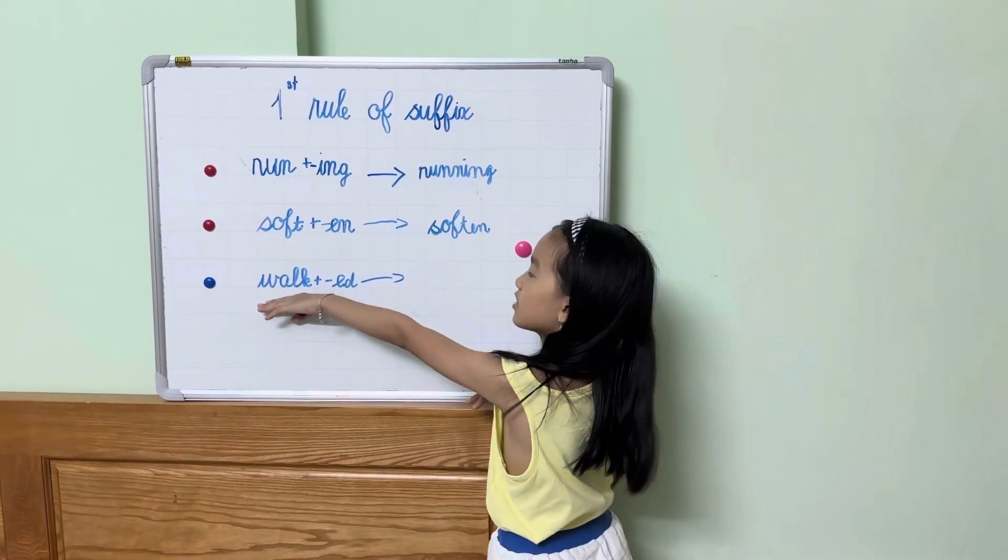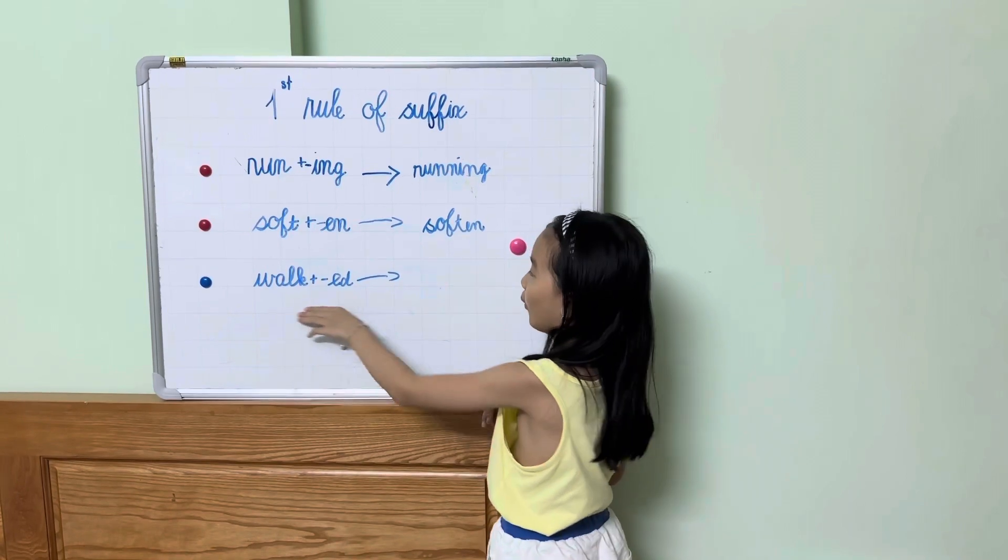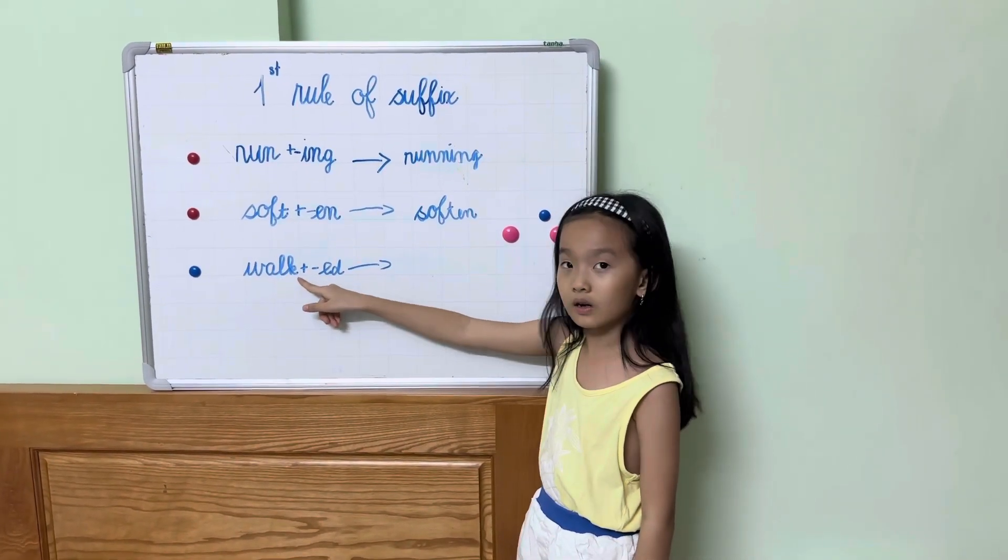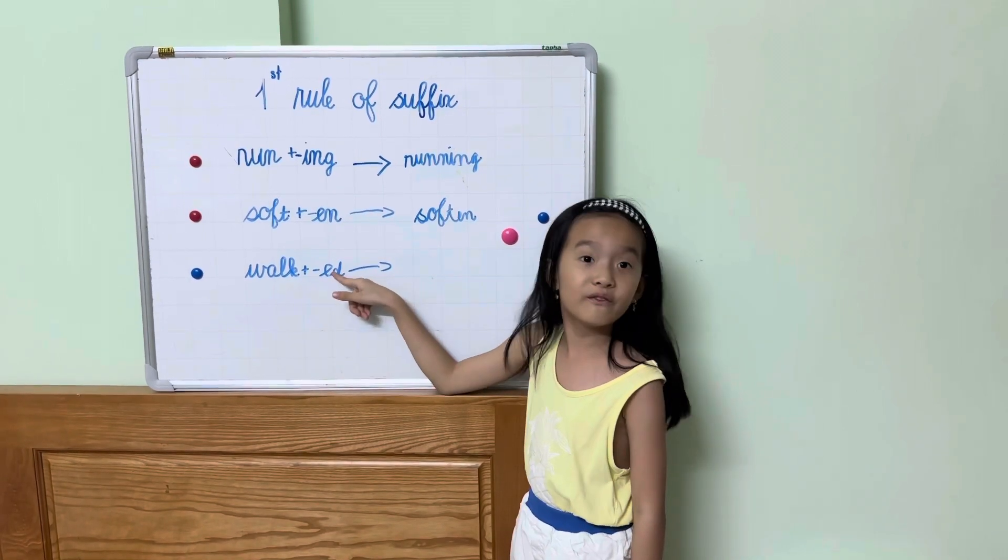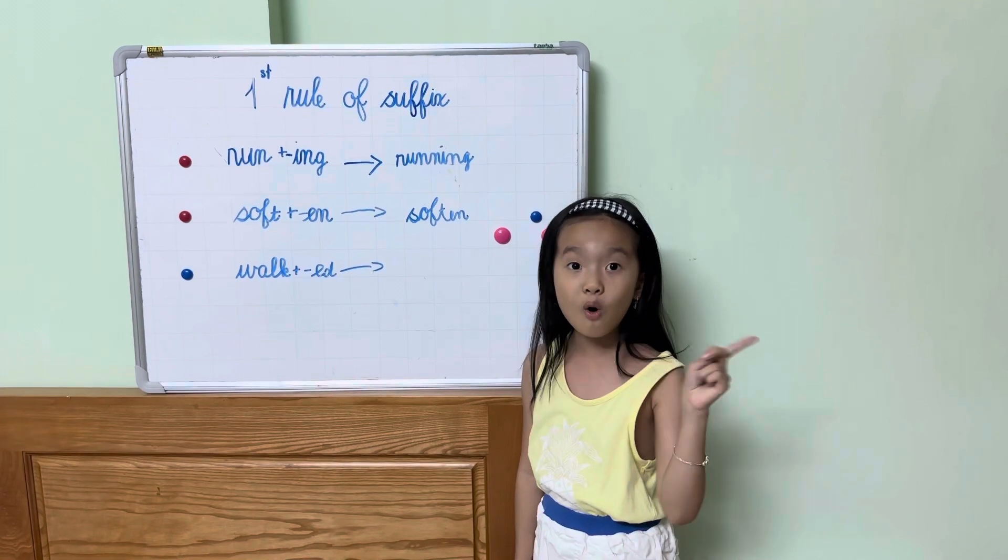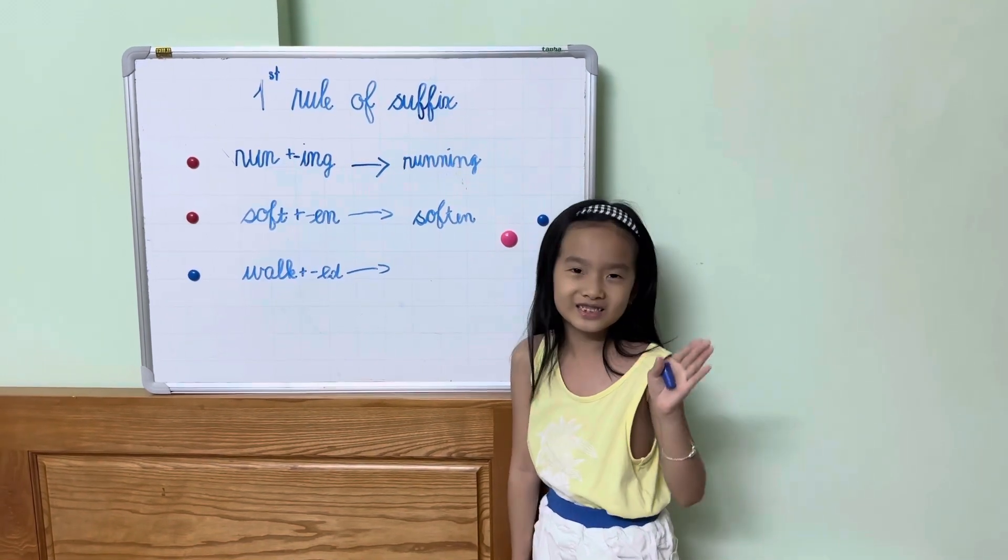Now is the word walked. Do you see short vowel? Yes. Do you see one consonant? No. Do you see a vowel here? Yes. So you're going to write like we write the word soften. Add no extra consonant.